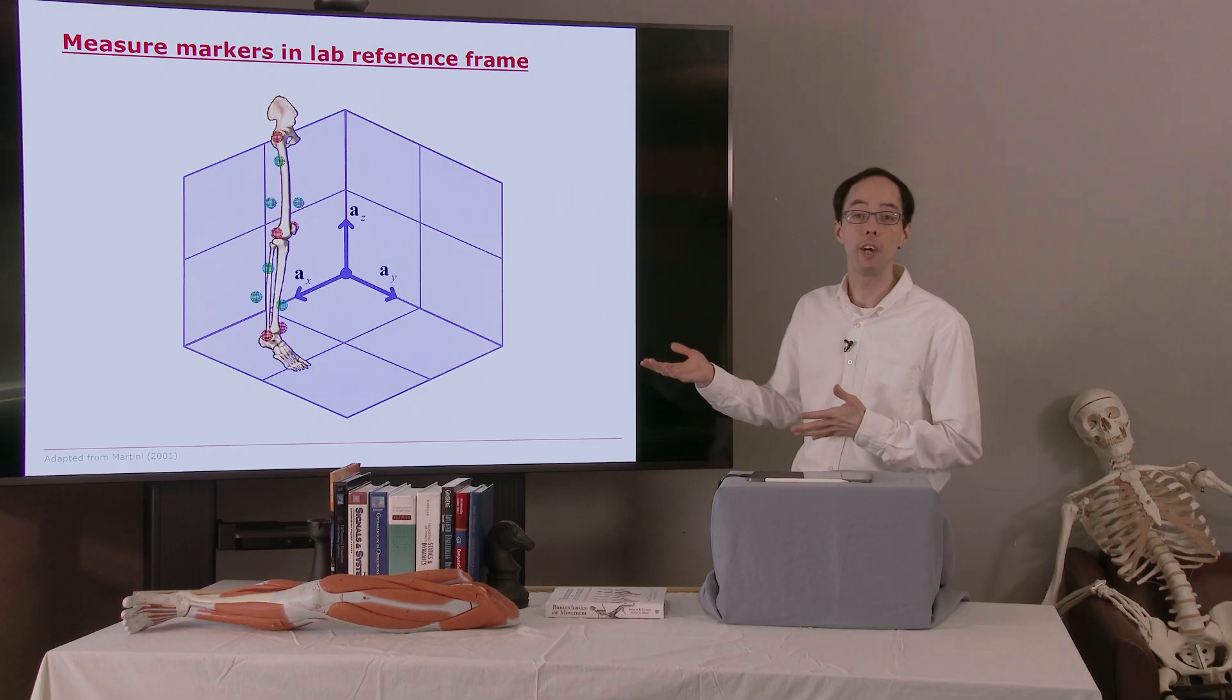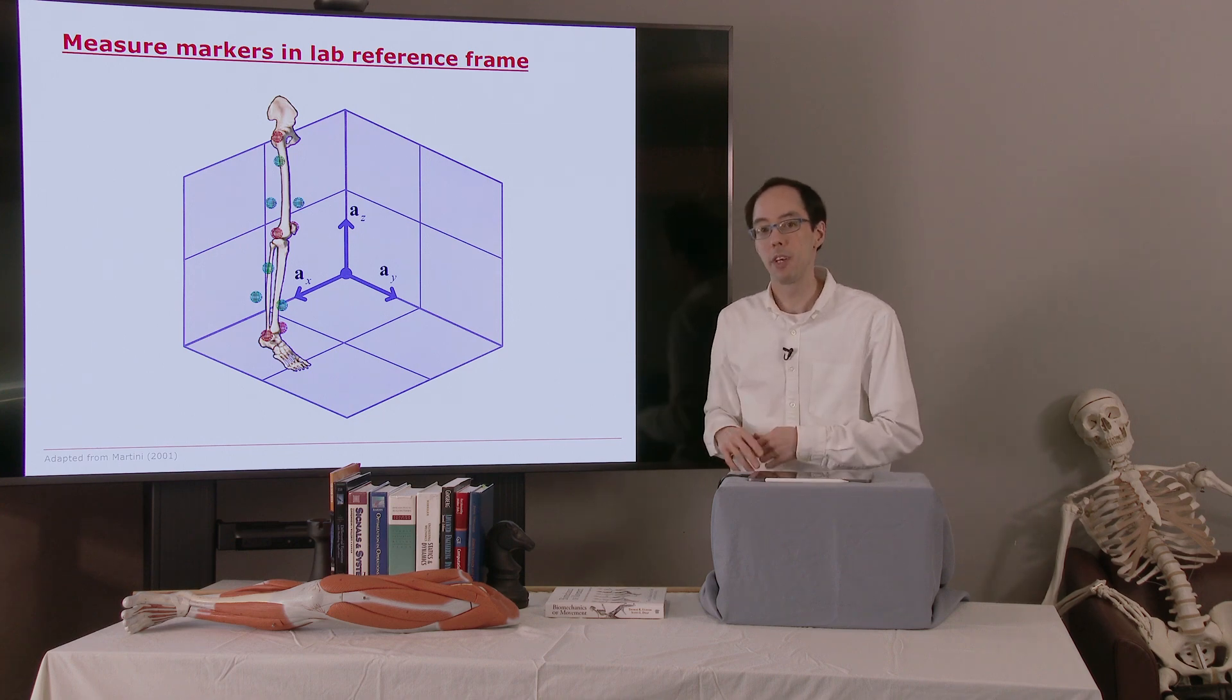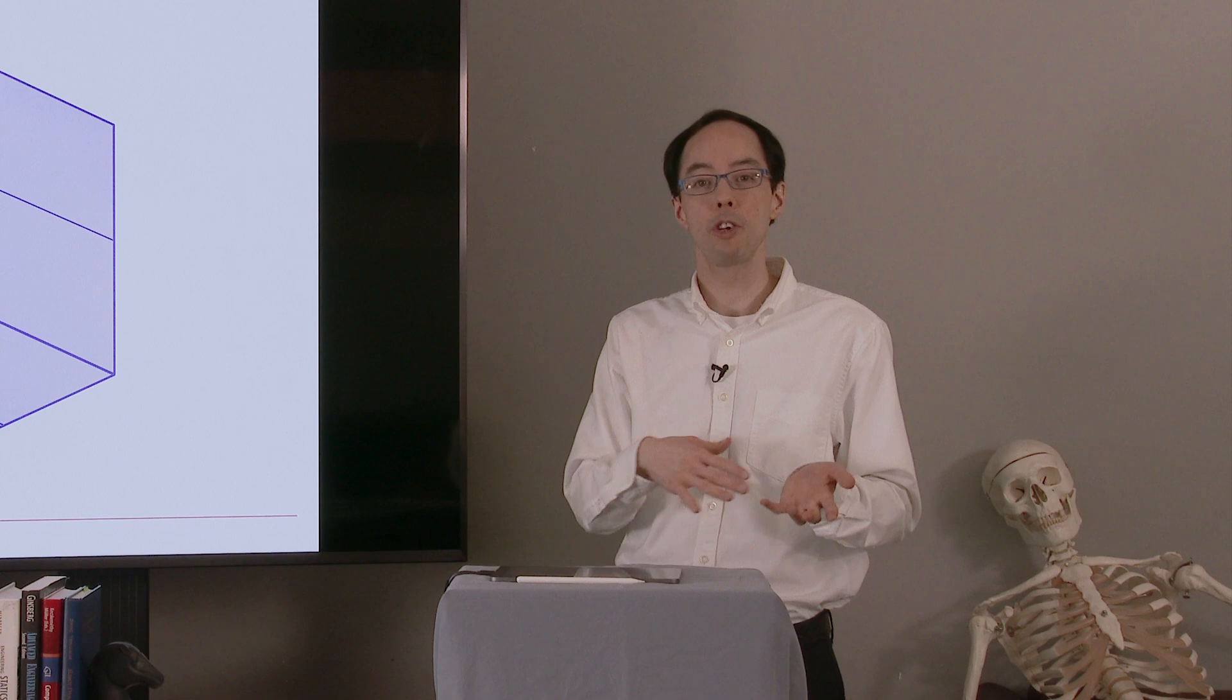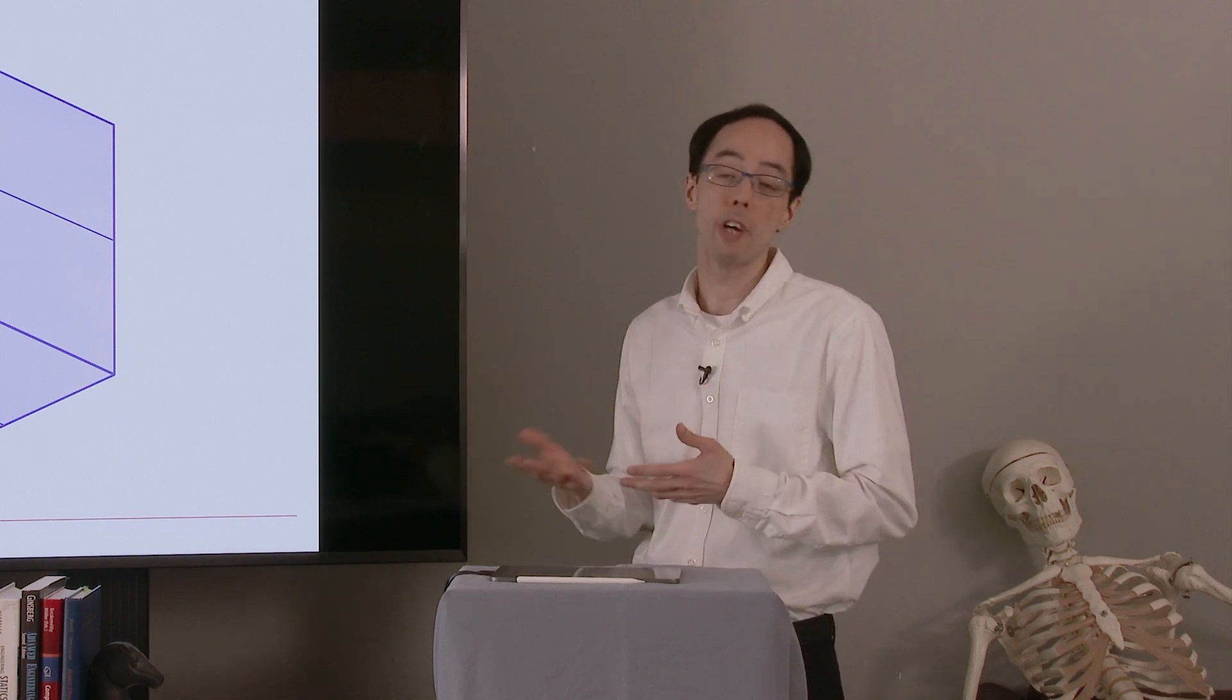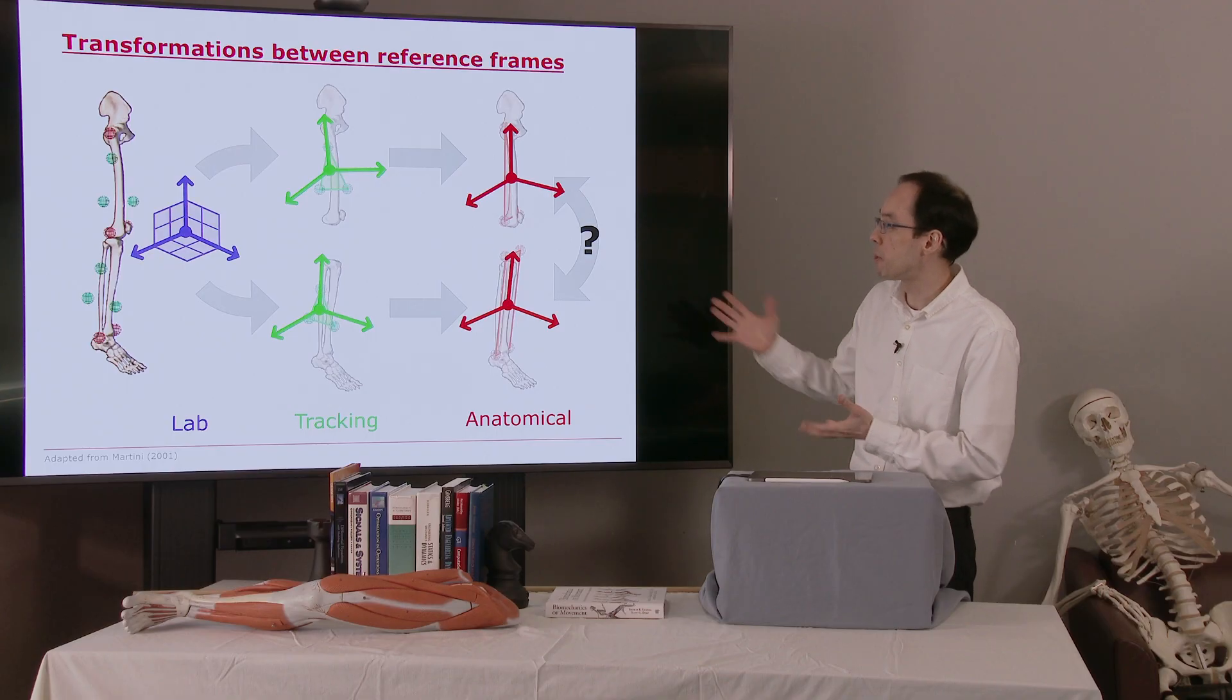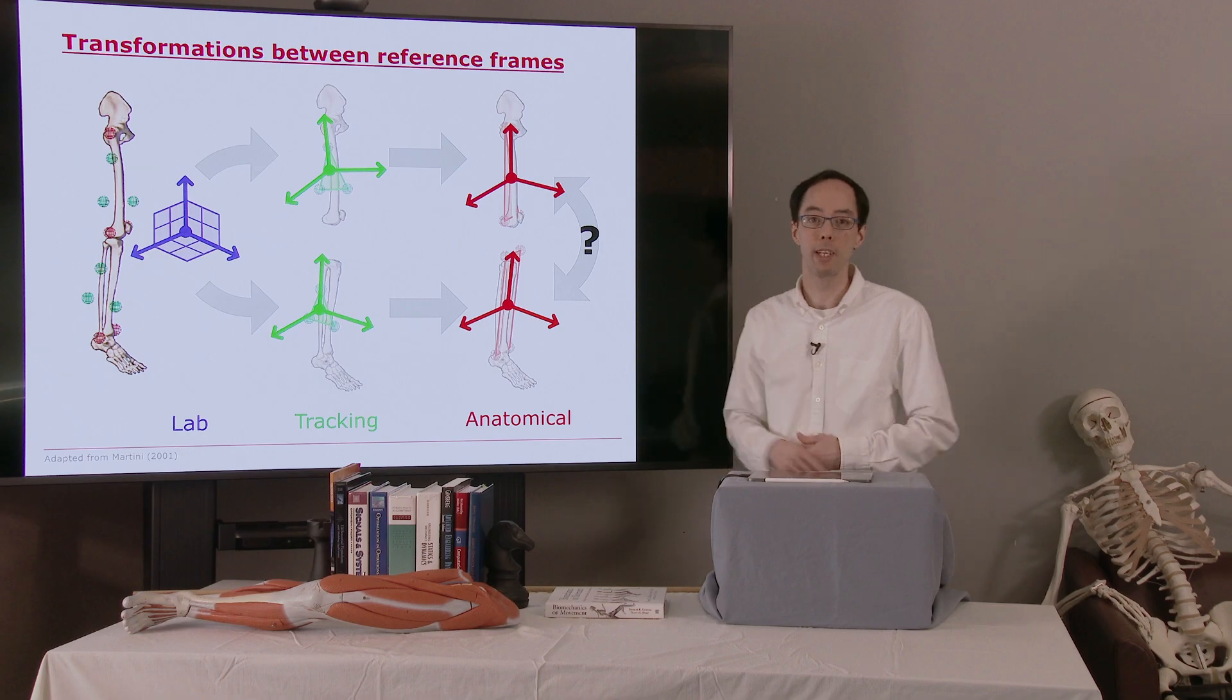After that point, we can remove any inconvenient markers and just track the tracking reference frames, and we can use that calculation we just performed to determine where the anatomical frames are if we know where the tracking reference frames are. That's sort of summarized in this picture. We're going to go through these steps in more detail in the upcoming lectures.